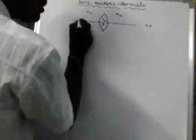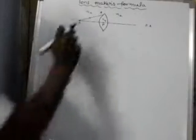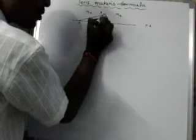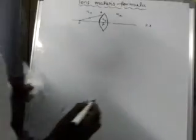Considering an object at position O — O is the position of the object. The incident ray O_A hits the lens at point A. On refraction at the convex surface, it bends towards the principal axis, forming an image at position I-dash.